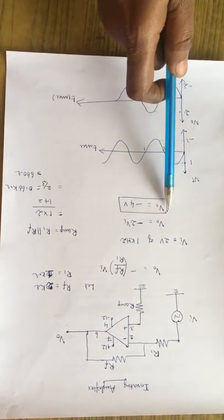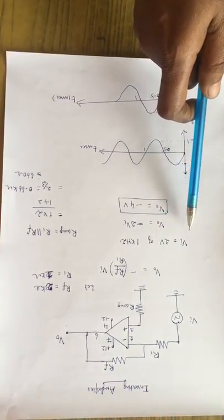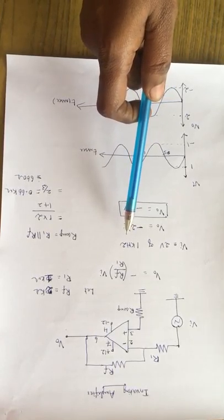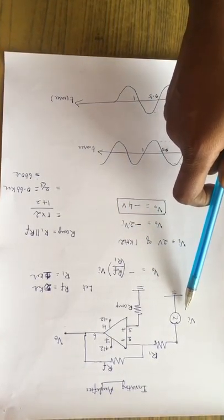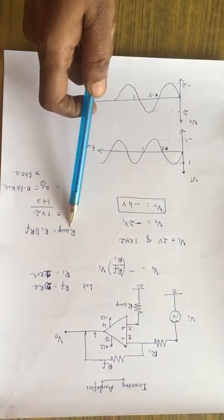We are getting the output voltage of minus 4 volts. If you are fixing input voltage equal to 2 volts of 1 kilo hertz frequency in the function generator given here pin number 2.